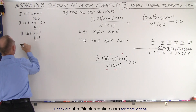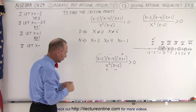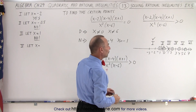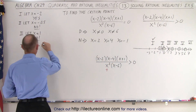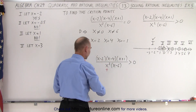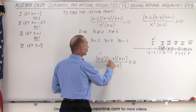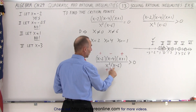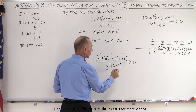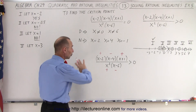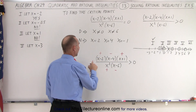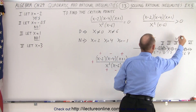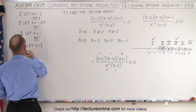Now region number four — let x equal three. Three minus two is one — positive. Three minus four is negative one — negative. Three plus one is four — positive. The x-squared term is always positive. Three minus six is negative. We have two negatives and the rest positive — an even number of negatives makes the whole fraction positive. Positive means greater than zero, so region number four satisfies the inequality. The answer is yes.